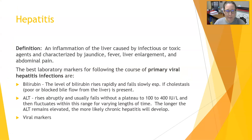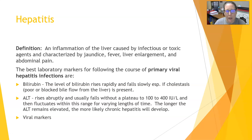Hepatitis is an inflammation of the liver that can be caused by either infectious or toxic agents and it is characterized by jaundice, fever, liver enlargement, and abdominal pain. The markers we're going to look at in this series are all for viral types of hepatitis, which would be an infectious type of hepatitis.